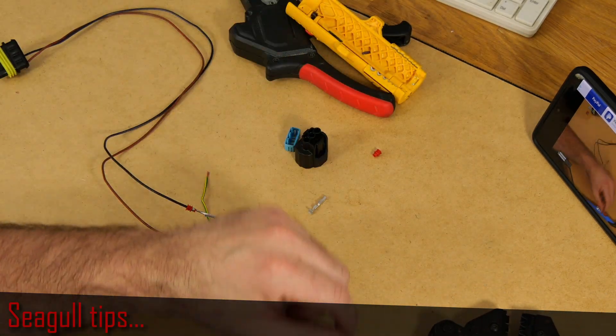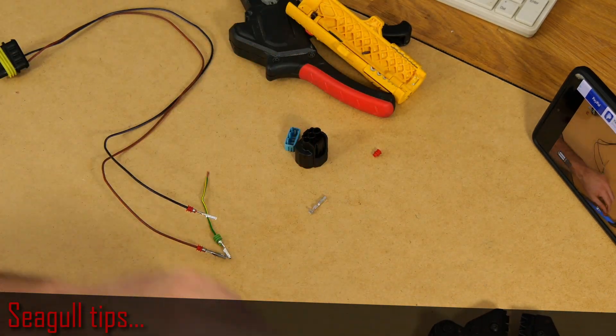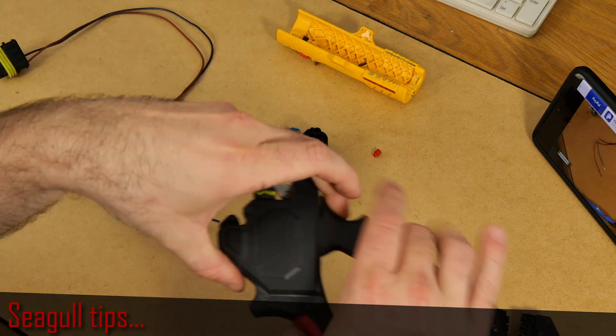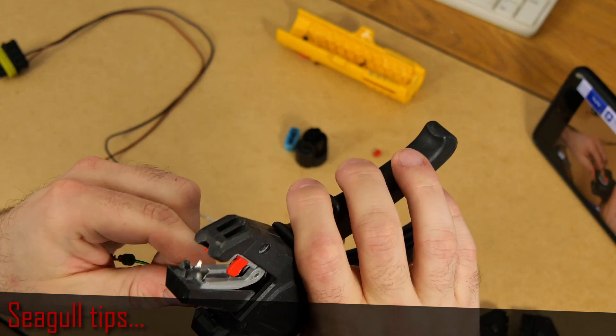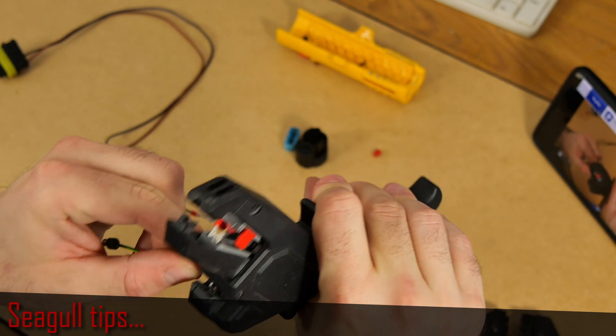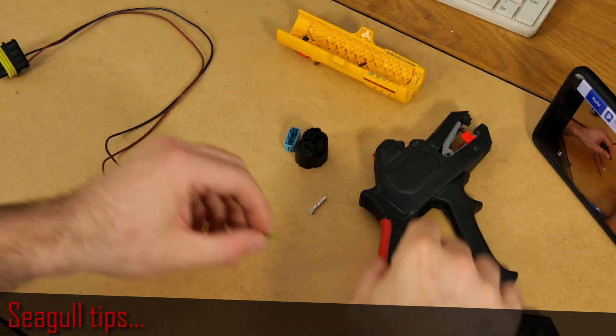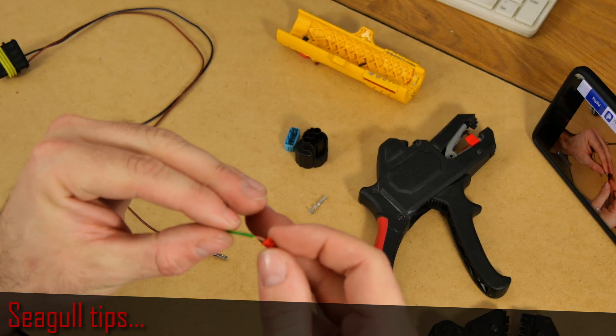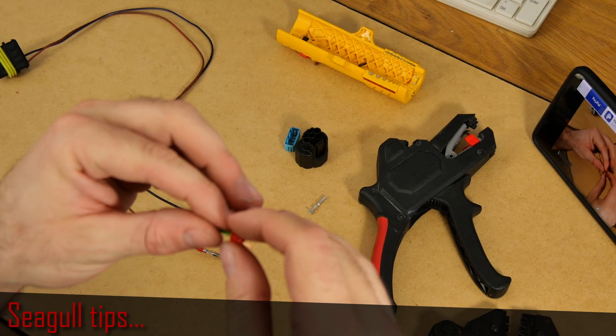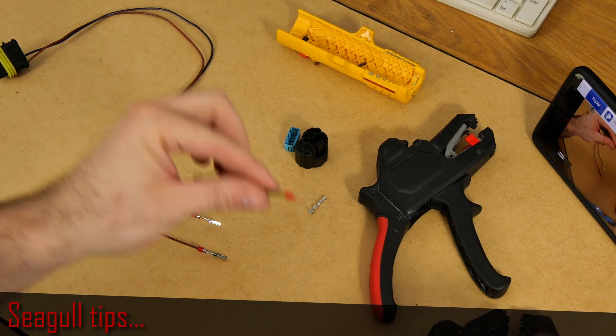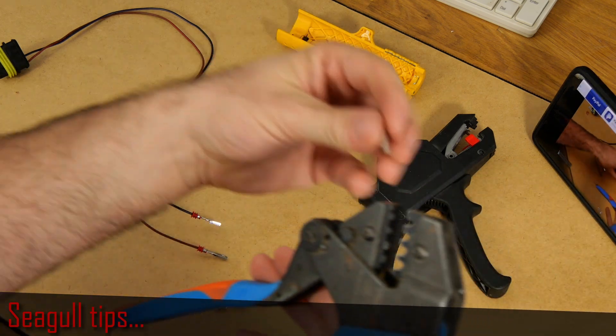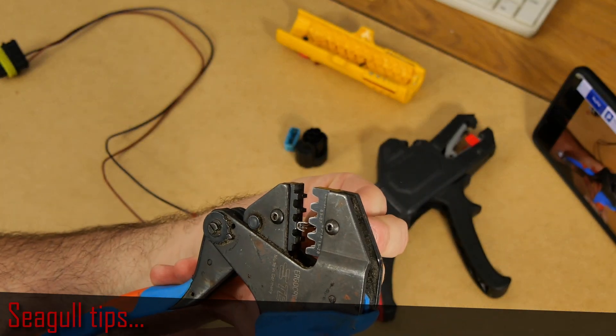Now we will make another one just for some practice. I will shorten it as well like a millimeter or two, just like this. Now put the seal on. You want to have it flush with the insulation.